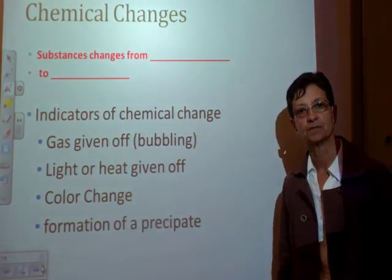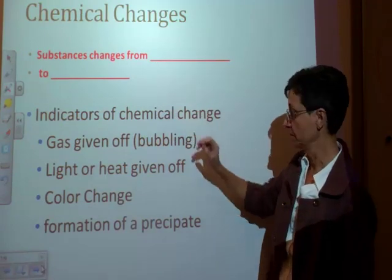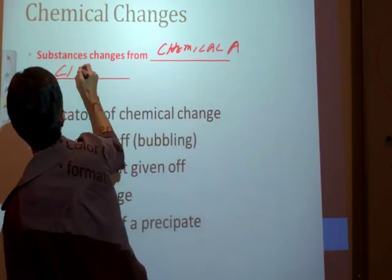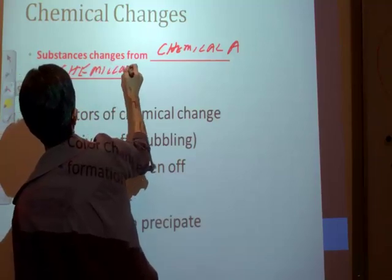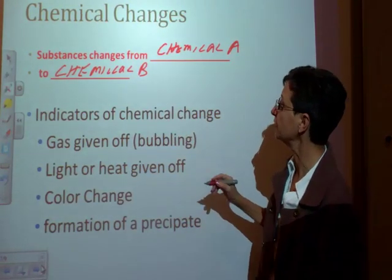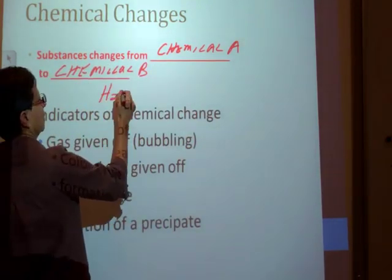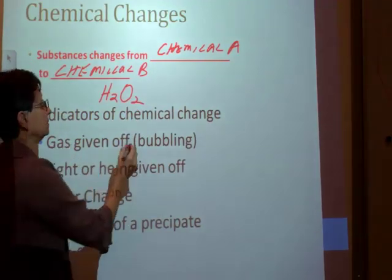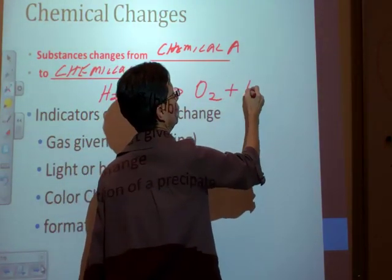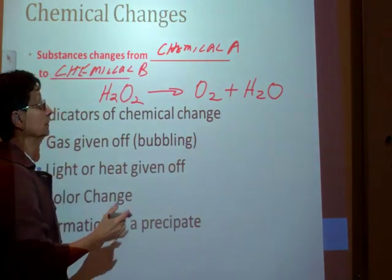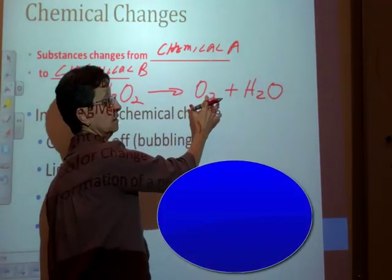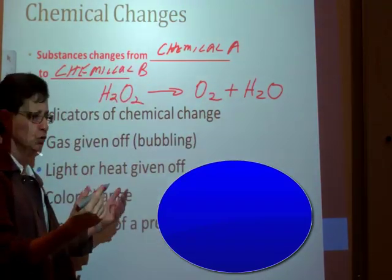Let's move on to chemical changes. In a chemical change, substances change from chemical A to chemical B — so we do change from one substance to another. For example, we can have hydrogen peroxide decomposing or breaking down into oxygen and water. Notice that we have changed from chemical A to two chemical Bs. Hydrogen peroxide — oxygen is given off, and water. New substances being formed.